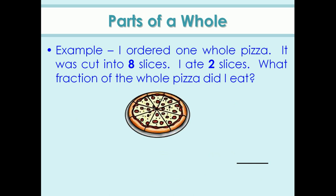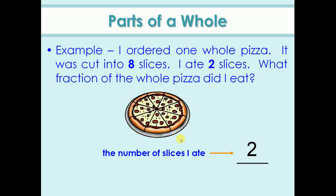Look at this example. I ordered one whole pizza. It was cut into eight slices. What fraction of the whole pizza did I eat? To write this fraction, the number of slices I ate should be written on the top of the line — that is two slices. Then we write the total number of pizza slices, which is eight. Therefore, the fraction is two by eight.